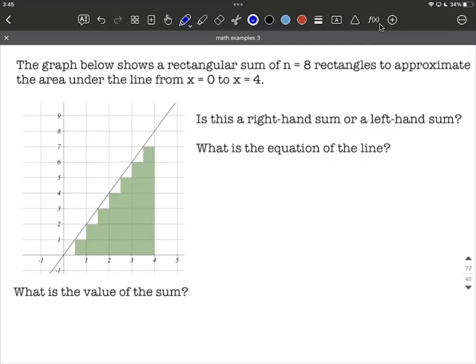So in this case, because the graph is on the left-hand side and basically we're drawing these rectangles up to the graph, they're touching on the left-hand side and then drawing them over, we call this a left-hand sum.